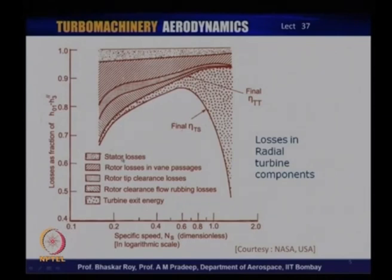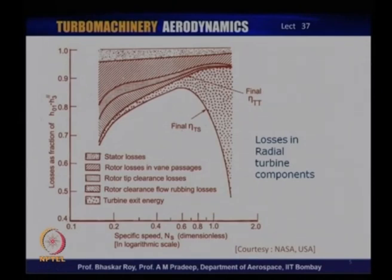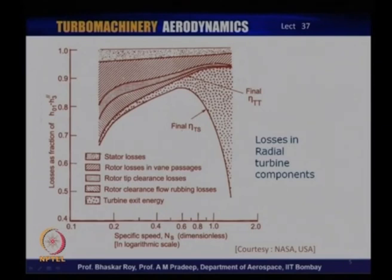The next shaded area is rotor losses in the rotating vane passages, and that also comes down with increase of specific speed, again because the local Reynolds number goes up, reducing boundary layer growth. Towards very high specific speed, the losses again go up because friction losses increase with very high speeds. This slight increase is mainly due to high flow speed resulting in higher friction losses.